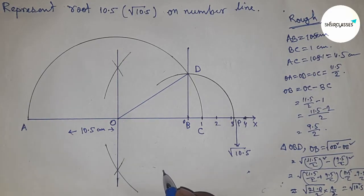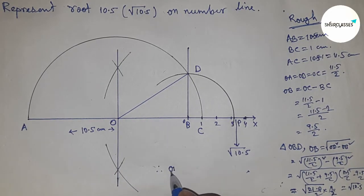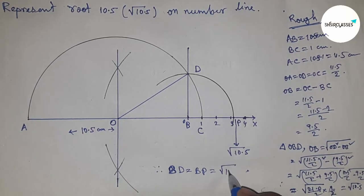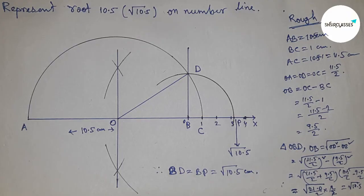Therefore, BD equals BP equals root 10.5. That's all. Thanks for watching. Please subscribe, like, and comment on my video.